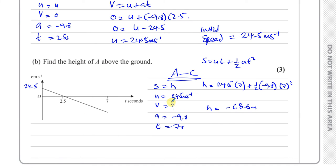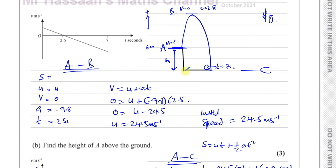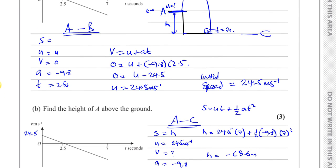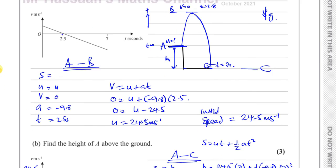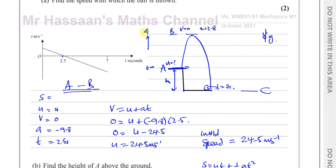That is the displacement of the ball from where it was first thrown. We've taken up as positive, so anything below the starting point comes out negative — so it makes sense that it's negative. But they're asking for the height of A above the ground, so the height of A above the ground is therefore 68.6 meters. We don't put the negative there; that's just a consequence of taking the starting point with up as positive.